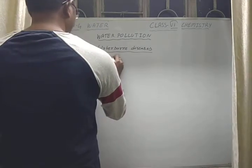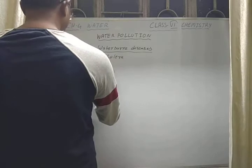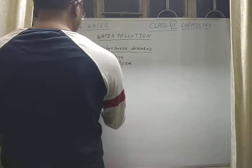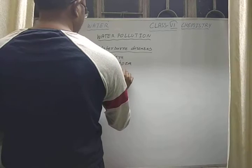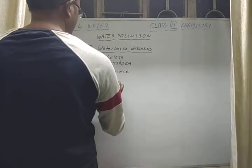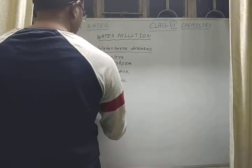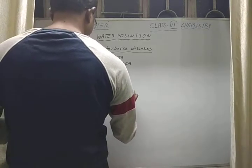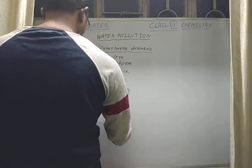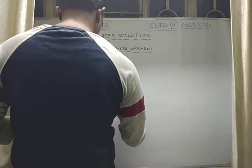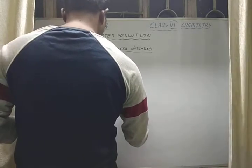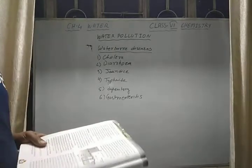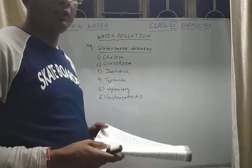The main water-borne diseases are: Number 1 — Cholera. Number 2 — Diarrhea. Number 3 — Jaundice. Number 4 — Typhoid. Number 5 — Dysentery. Number 6 — and others. These are the main waterborne diseases that we may suffer from if we use contaminated water.